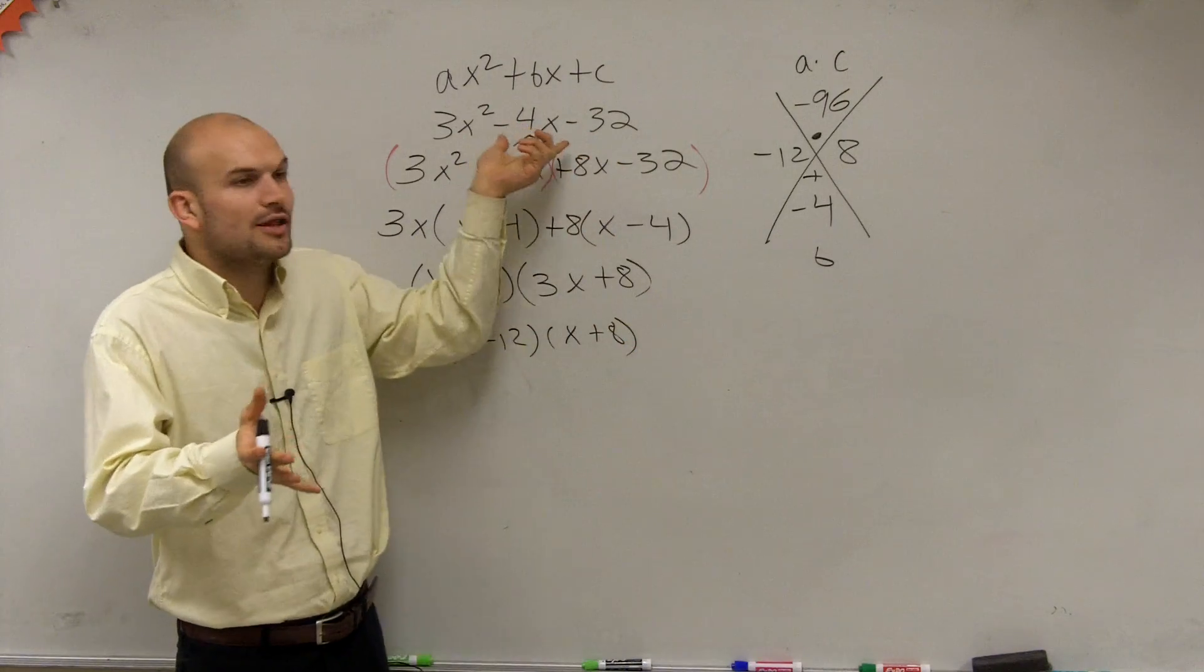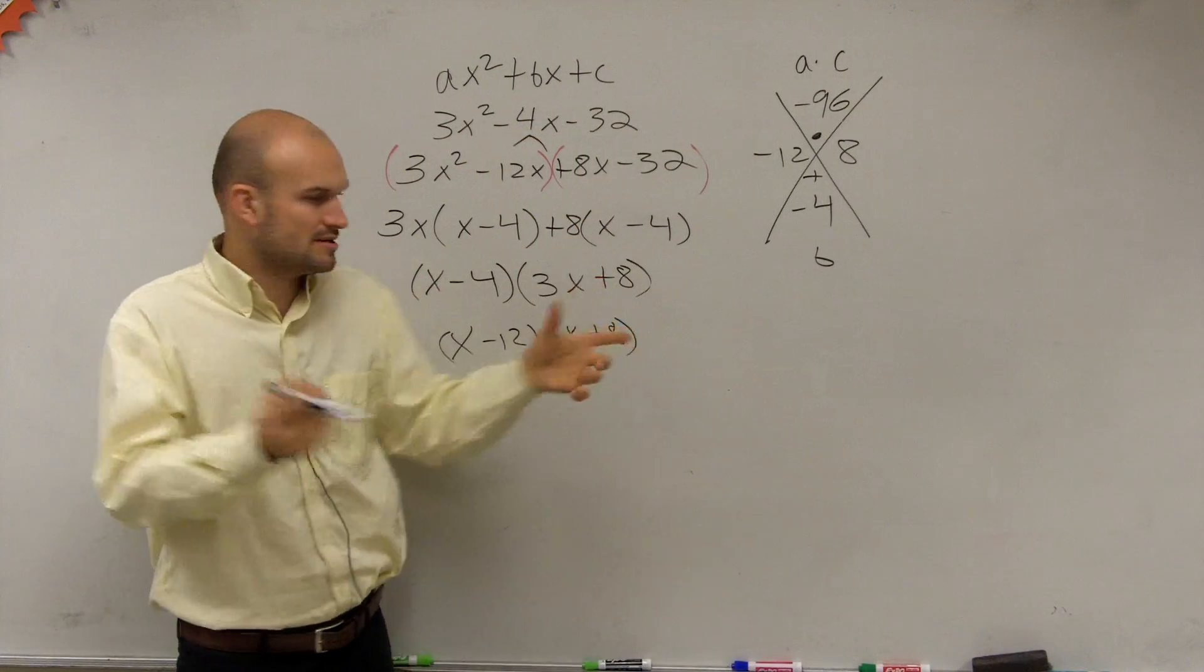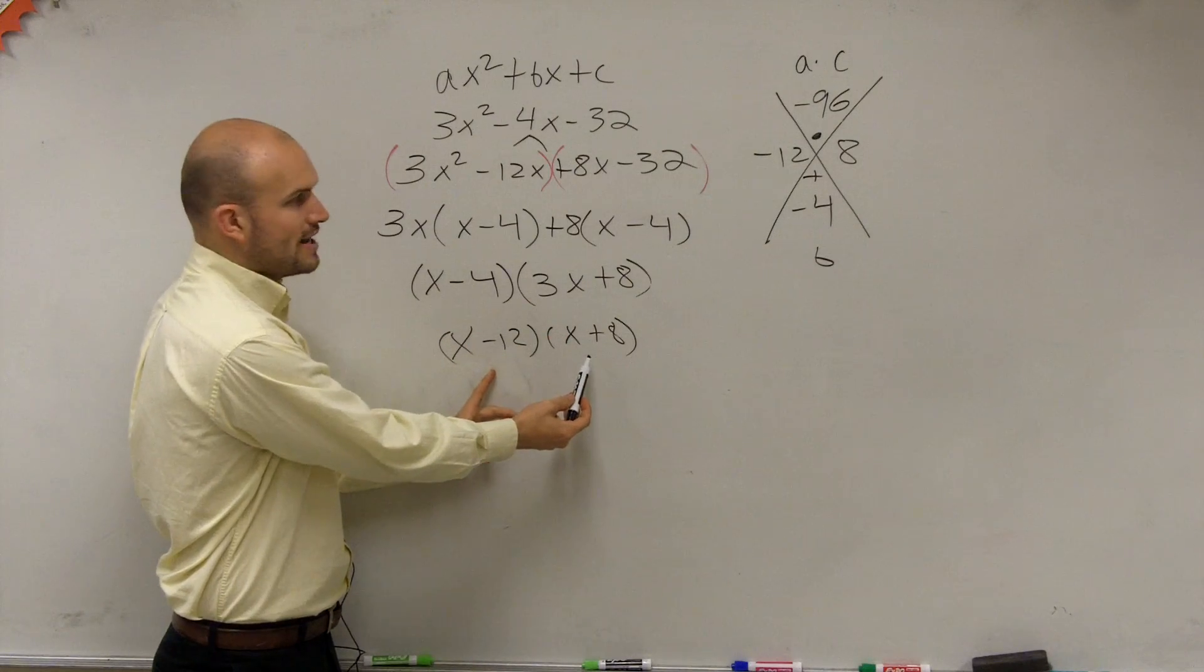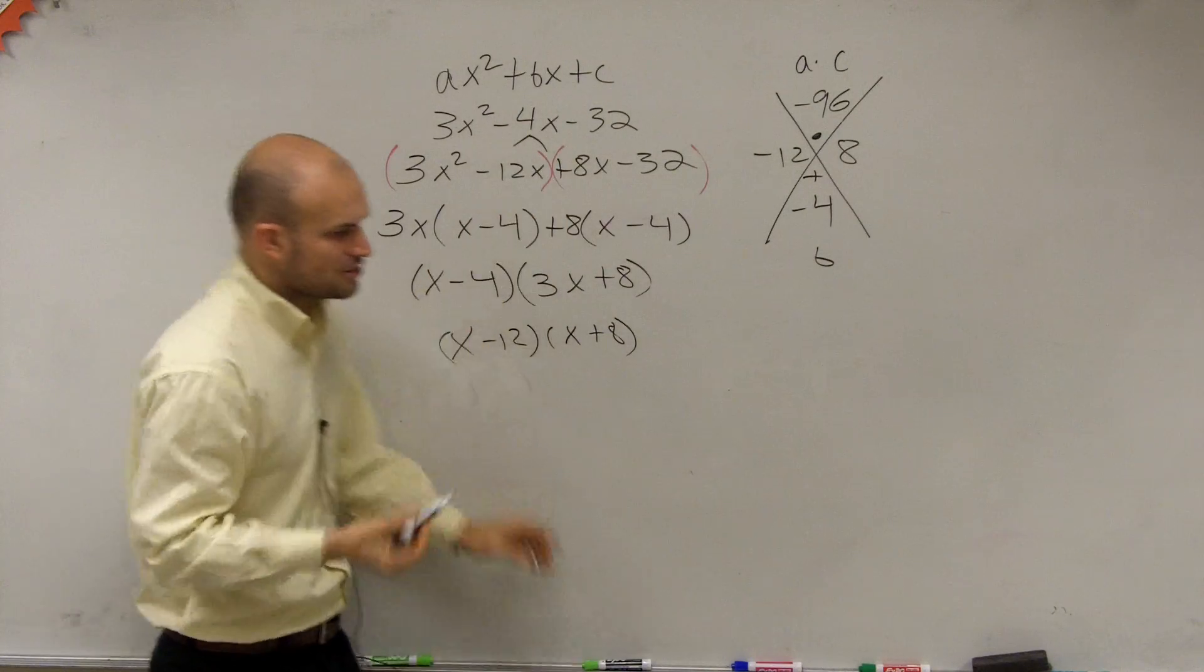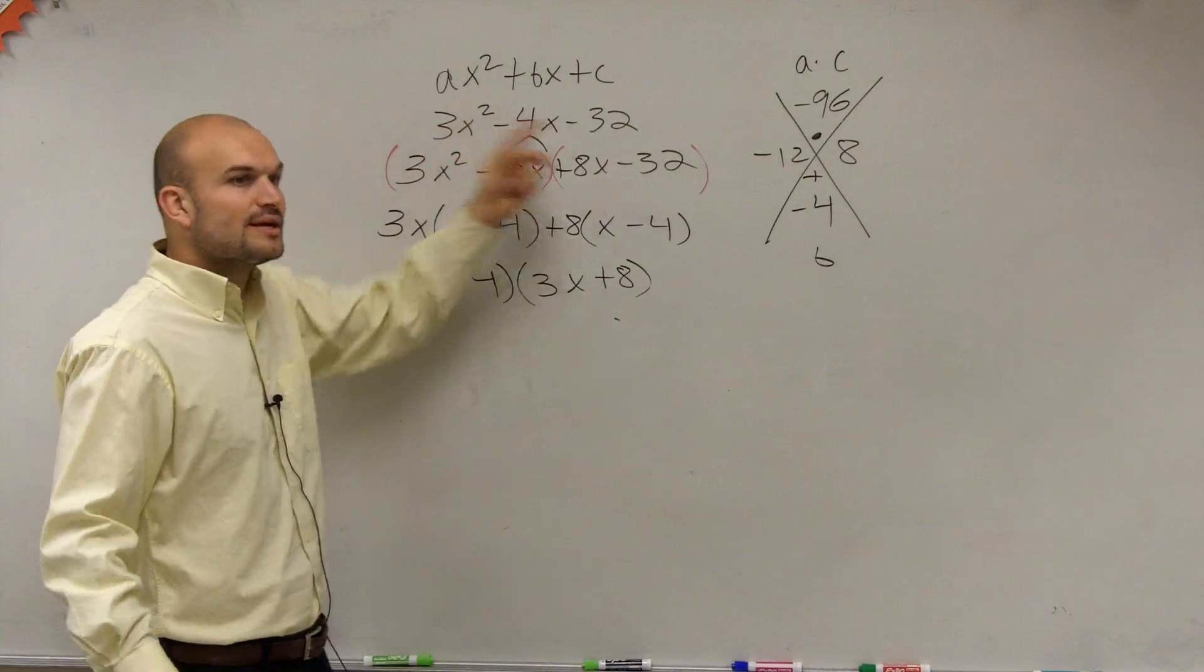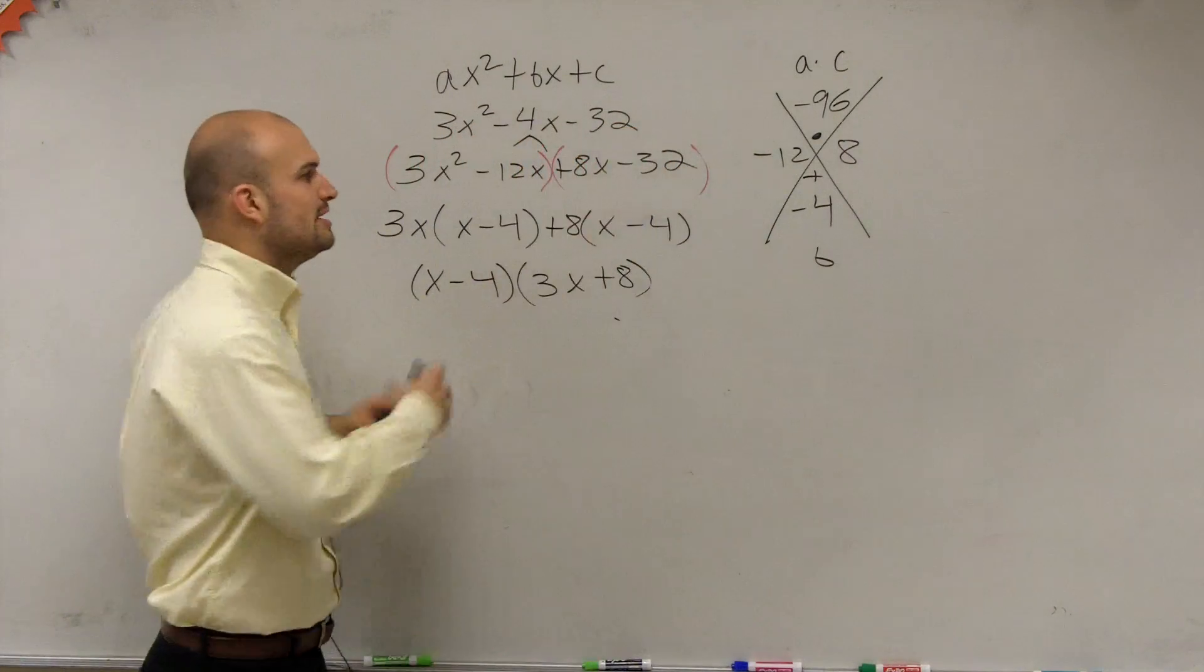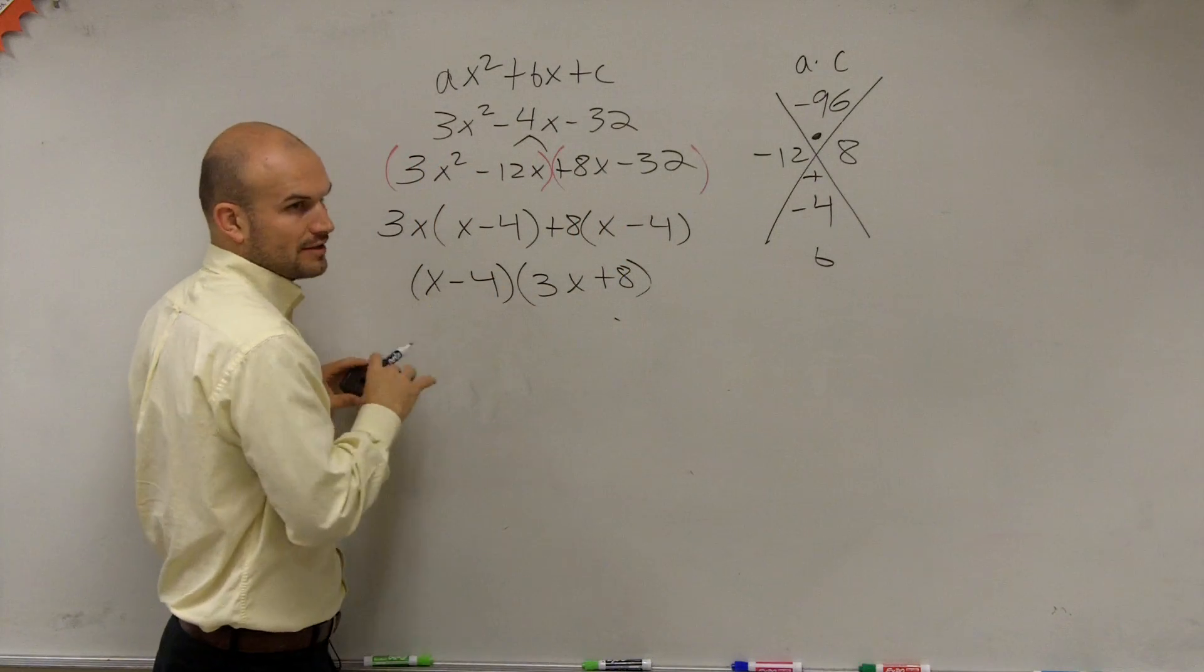Factoring is taking a polynomial and rewriting it as a product of its factors. This times this are not the factors of that. This times this does not multiply to give you that. So what's affecting this is that 3. That 3 is affecting your factors. So we use this method to account for the 3 and then to factor it correctly.